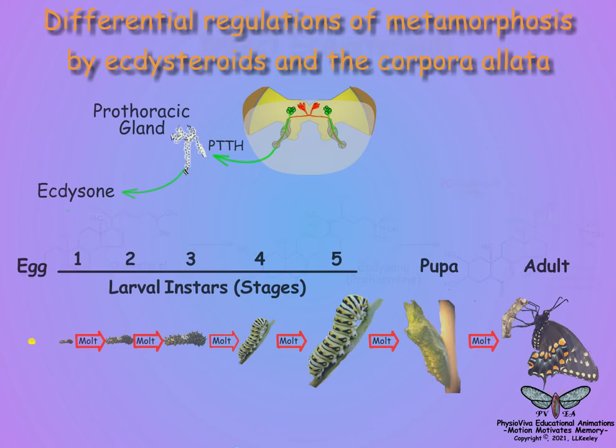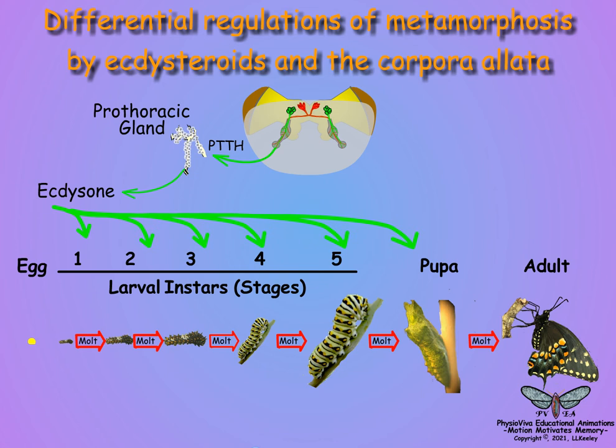Ecdysteroids regulate the onset of all molts in response to physiological triggers such as body weight or head capsule width, in both hemimetabolous and holometabolous insect species.